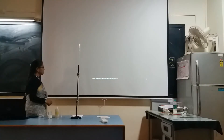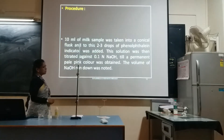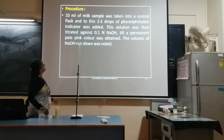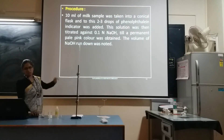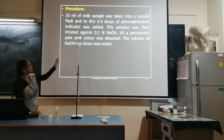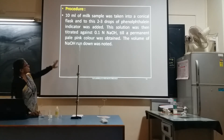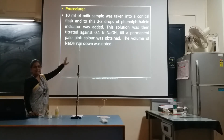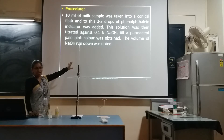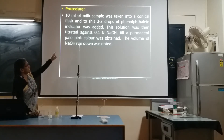Now let us go through the procedure. First, you need to take 10 ml of milk sample into the conical flask, and to this you need to add 2 to 3 drops of phenolphthalein indicator.